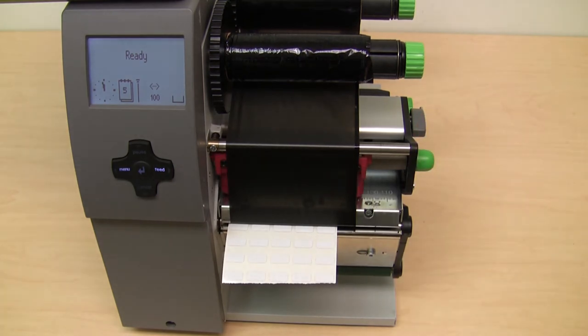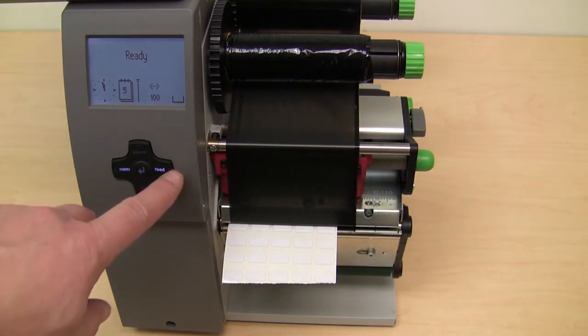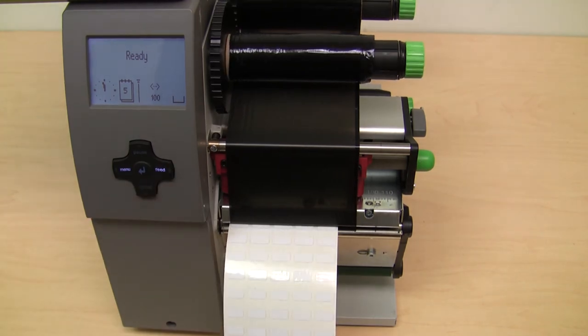After the print head gets locked down you can press the feed key. The printer will calibrate itself by feeding a couple of rows of labels and it's ready to go.